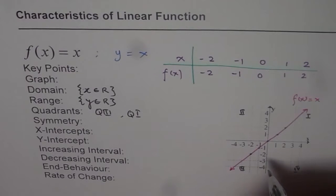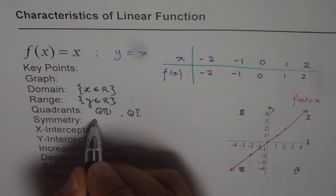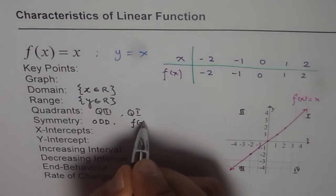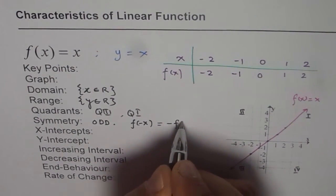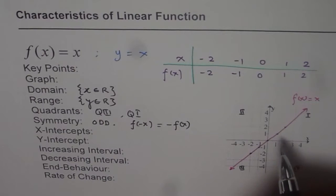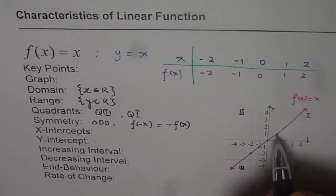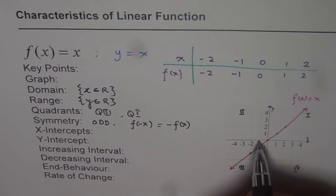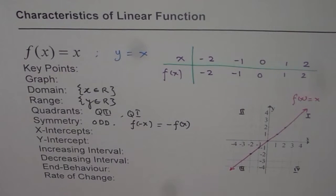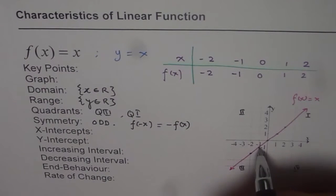The symmetry of this line is odd, since it is symmetric about the origin. Odd symmetry means that f of minus x equals minus f of x. For example, if I take x as 1, the value is 1. But if I replace x with minus x, we get minus 1, which is the same as minus of f(x). So if you reflect a point about the origin and you have a corresponding point, then it has odd symmetry.